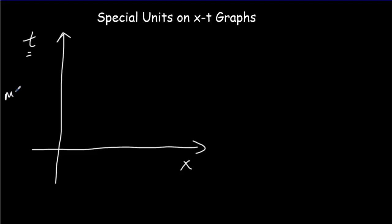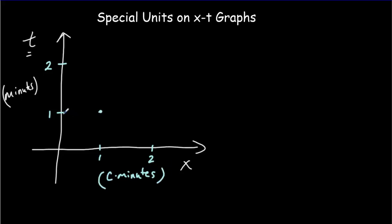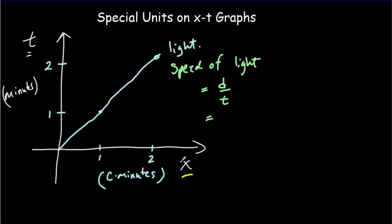Our time units could be seconds, minutes, years — let's use minutes as an example. We label the vertical axis in minutes, and along the distance axis we use light-minutes: how far light travels in one minute. So after one minute light has traveled one light-minute, after two minutes two light-minutes, giving us the worldline of light. The speed of light equals distance over time, which in these units is one light-minute per minute. One divided by one gives a speed of one, so the speed of light c equals one in units of the speed of light.